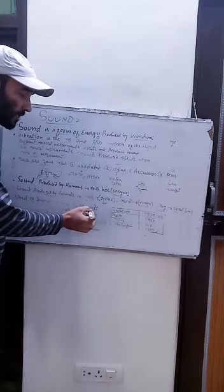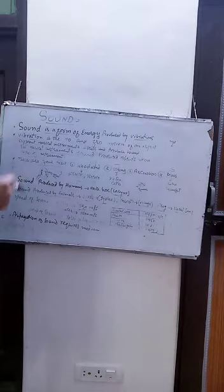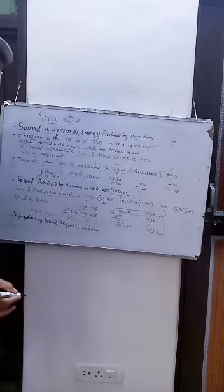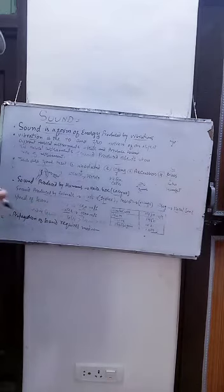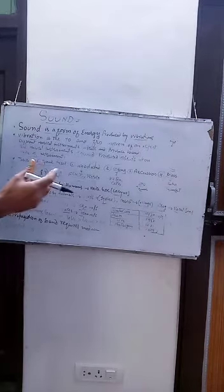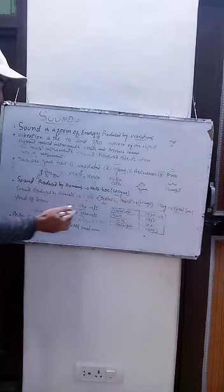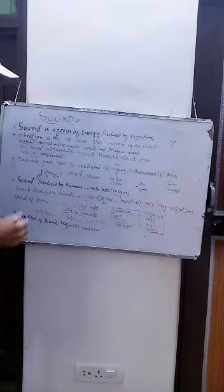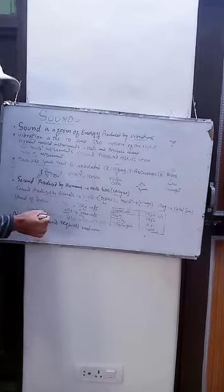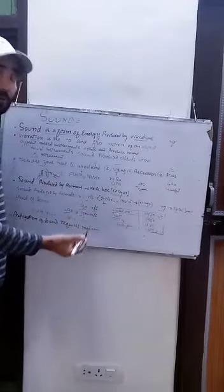That means sound travels 330 meters per second in air. Compared to light, this is much slower. If we talk about water, the speed is 1500 meters per second. So in water, sound travels much faster than in air. The speed of sound in solids is fastest, then liquids, and then gases.